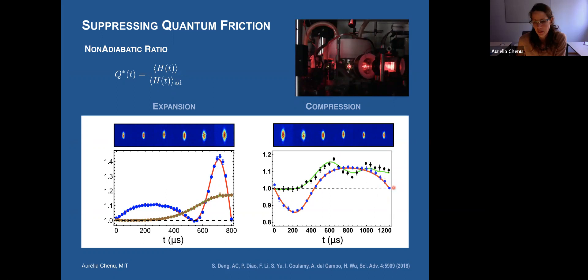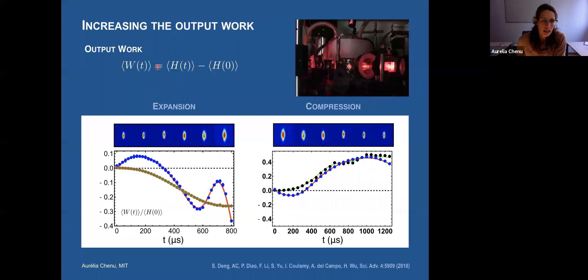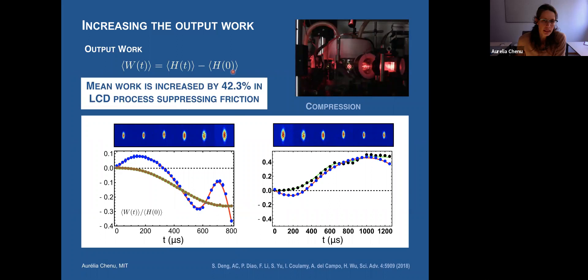What happens to the power? The power is essentially the final energy minus the initial energy. Comparing the reference and the controlled work extracted from the medium, with this technique we have a very large increase of work — about 42% — because we have removed the friction. The same happens with compression. This is an implementation of these techniques in a 3D unitary Fermi gas as the working medium.